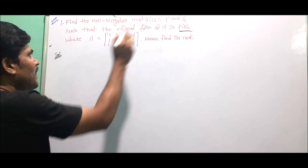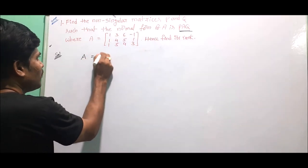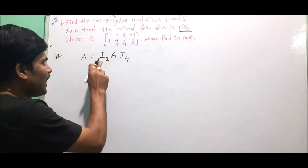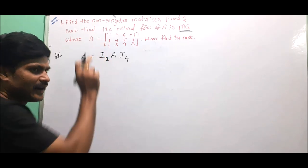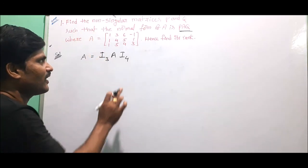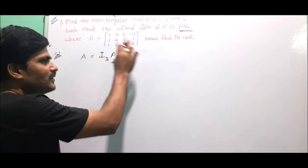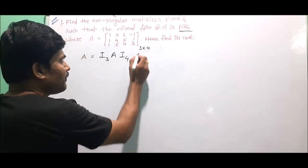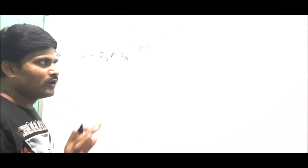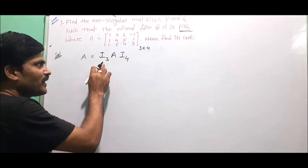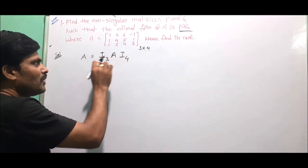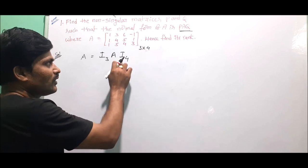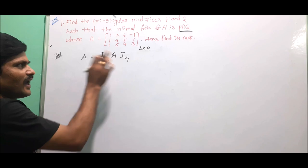First, we write the matrix A as I3·A·I4. Here I3 is called the pre-factor unit matrix of the given matrix A. The order of the matrix A is 3 by 4, so the number of rows equals 3 and the number of columns equals 4. Therefore, the pre-factor matrix is I3 and the post-factor matrix is I4.